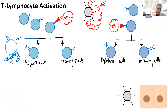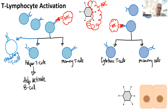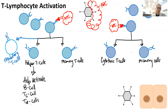What helper T cells are going to do is they help activate other white blood cells — things like B cells, cytotoxic T cells, regulatory T cells, natural killer cells, and macrophages. Helper T cells are really important for making sure everything gets moving and doing what it needs to do to clear out the foreign invader.